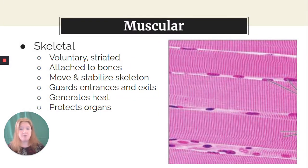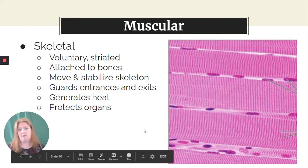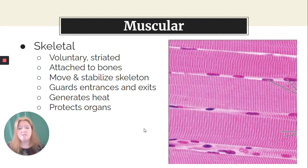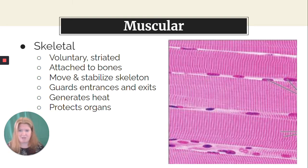Now we're onto muscular tissue — three types. First is skeletal muscle, the one most people think of. It's our muscular system, a voluntary muscle, and it's striated — you see these stripes, the striations. Skeletal muscles attach to bones. It moves and stabilizes our skeleton, helps with our posture, guards the entrances and exits to our body, generates heat when you shiver or exercise, and serves to protect your organs as another layer below your skin.